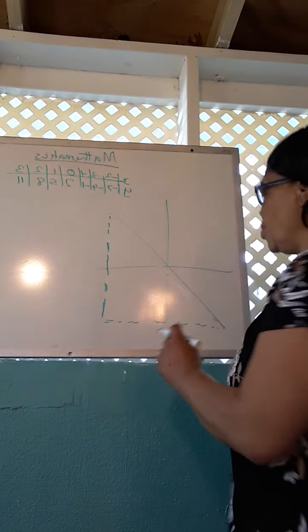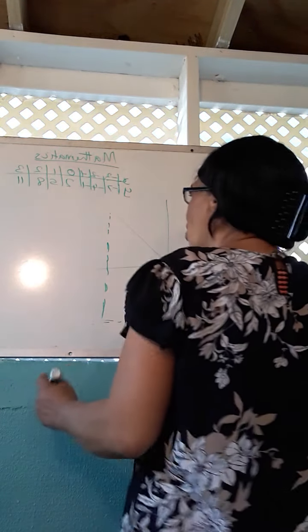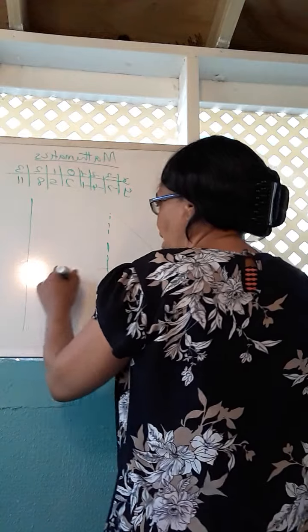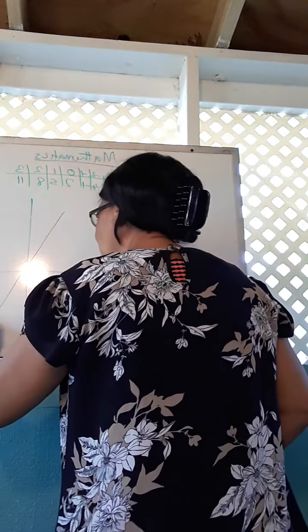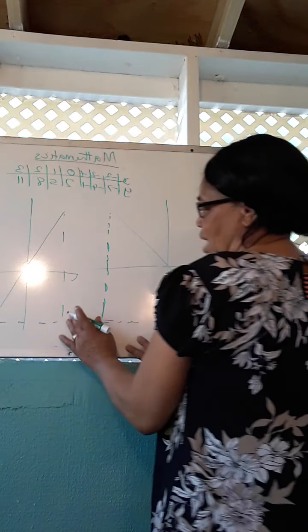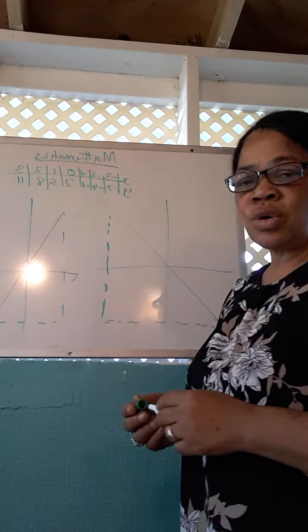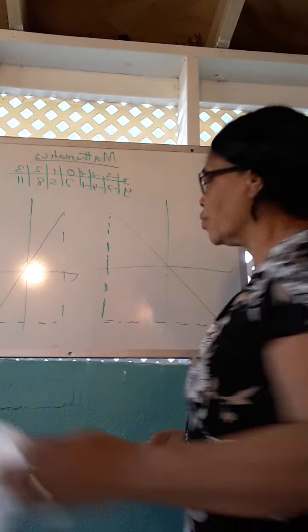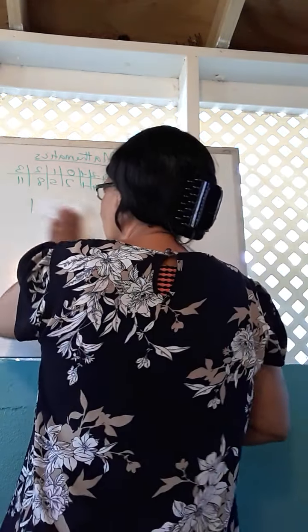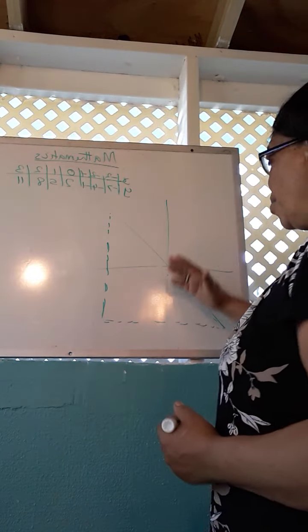And so a slope, the gradient could either be a positive gradient, a positive if it's going this way, or if I had a graph that was going that way, then I would end up getting a negative gradient. Negative is on this side, positive is on that side.